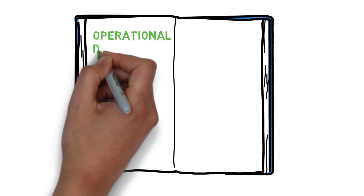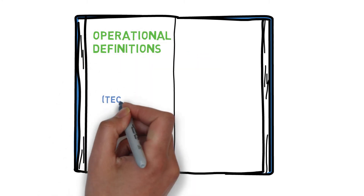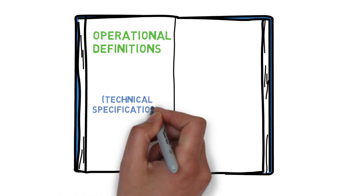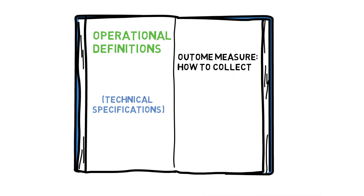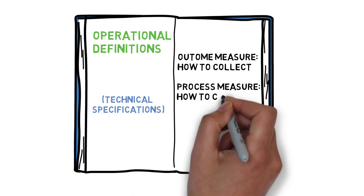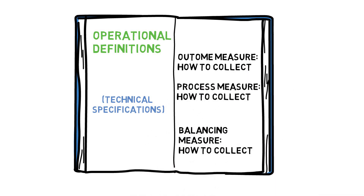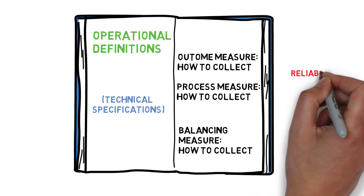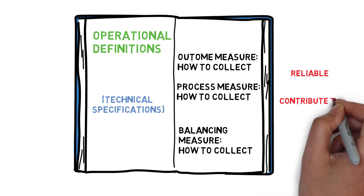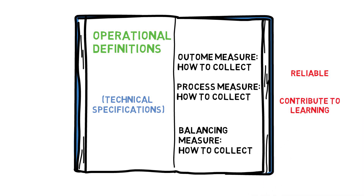Once a team has identified their family of measures, it is very important to create operational definitions for each of those measures. Operational definitions are sometimes referred to as technical specifications. To contribute to learning, measures must be collected in the same way each time regardless of who is collecting the data. If measures are not collected consistently, changes may be erroneously attributed to the changes we have made when really they are just changes to the measures due to the way the data was collected. Good operational definitions ensure that the measures collected are reliable and can actually contribute to the team's learning about whether their changes are improvements.